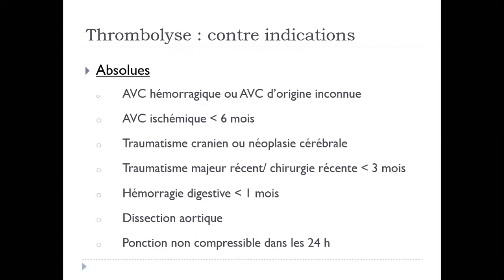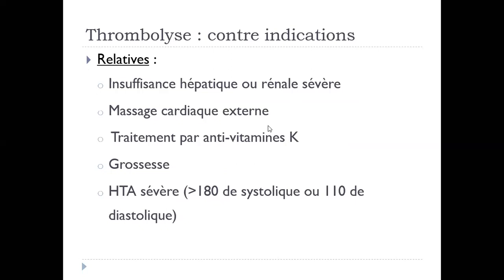Généralement ça fait aussi l'objet de questions d'examen. Quelles sont les contre-indications de la thrombolyse ? Les contre-indications absolues sont : un AVC hémorragique ou AVC d'origine inconnue, AVC ischémique inférieur à 6 mois, traumatisme crânien ou néoplasie cérébrale, traumatisme majeur récent ou chirurgie récente inférieur à 3 mois, hémorragie digestive inférieure à 1 mois, dissection aortique, ponction non compressible dans les 24 heures.